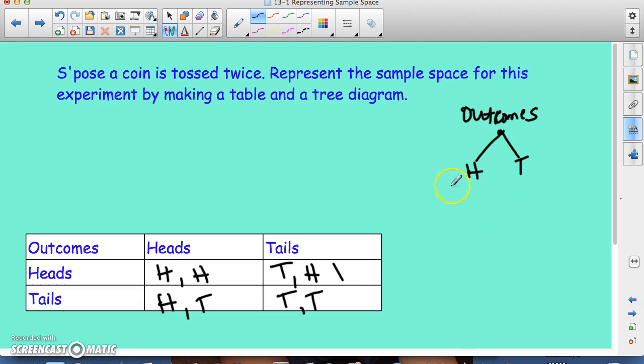And then the second toss, you could either get heads or tails. And then after this, you could also get heads or tails. So this would be your first toss. And then your second toss would be heads or tails. So this is the table, and this is the tree diagram.